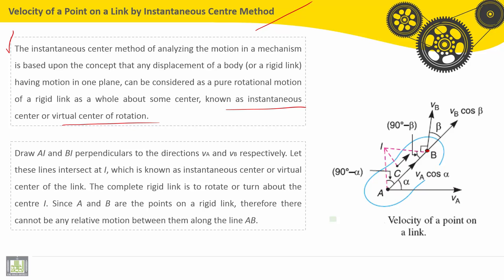So first, draw AI and BI perpendicular to the directions of VA and VB. So we know that VA, this is VA cosine alpha, this is VB cosine beta. So VB is here, VA is here. How to find I? So IA, the line IA should be perpendicular to VA, and BI should be perpendicular to VB.